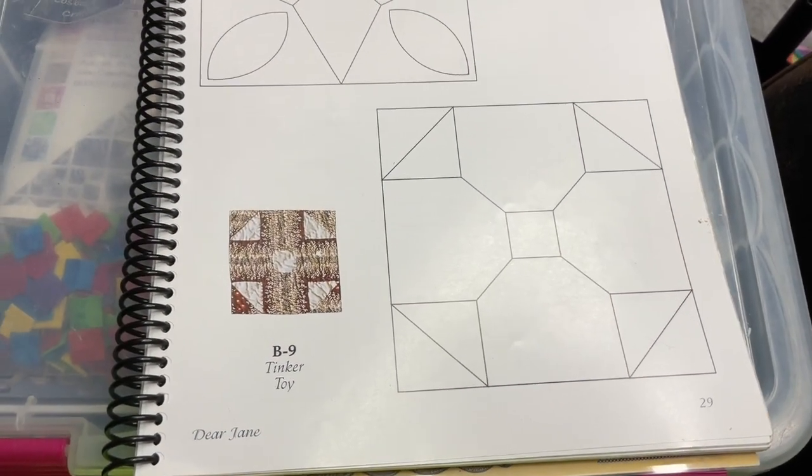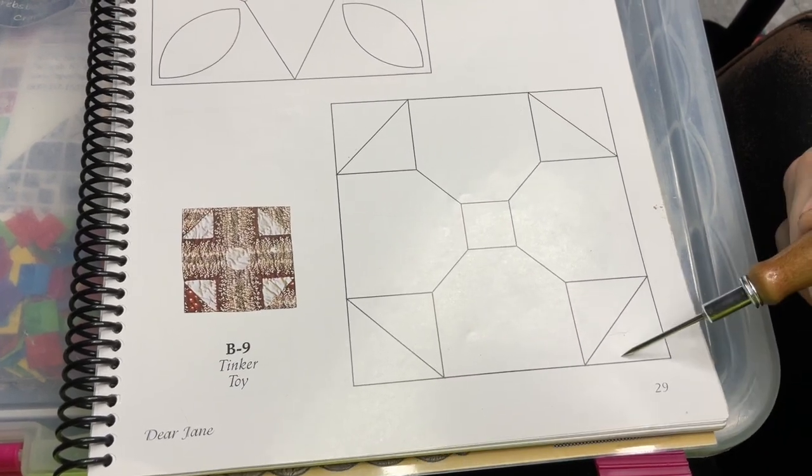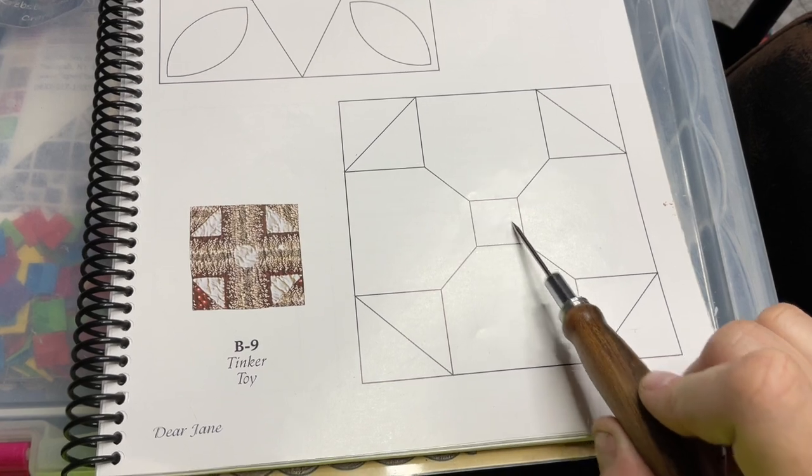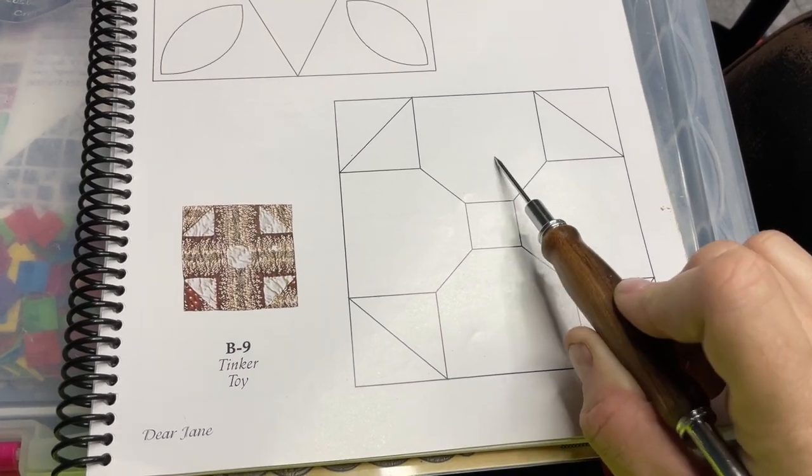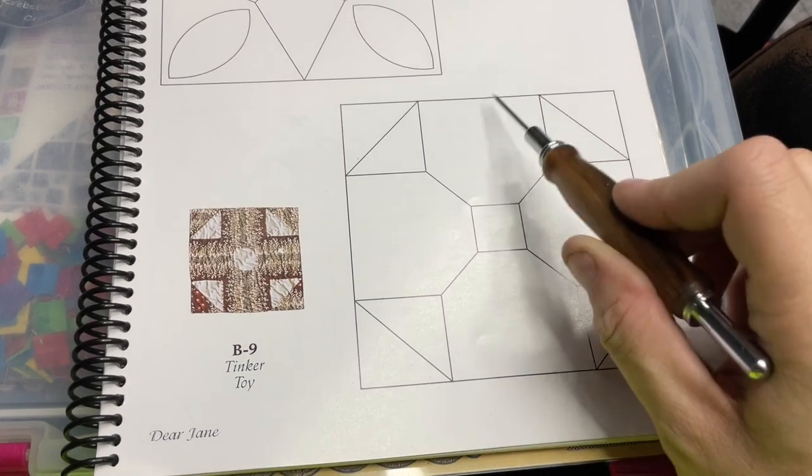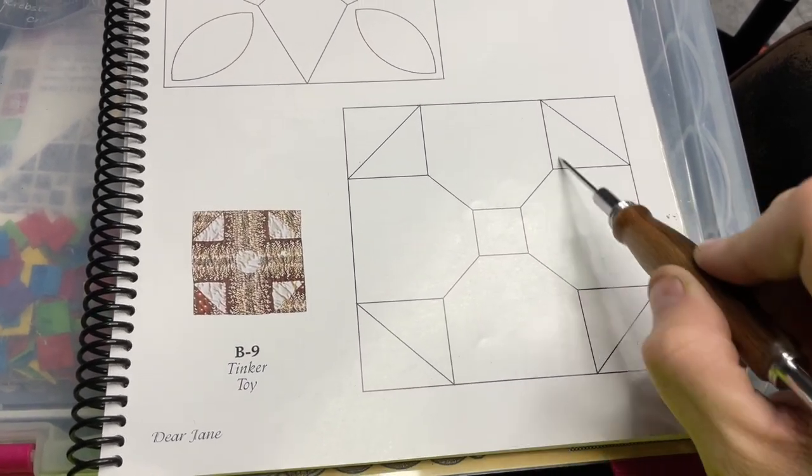Here's B9. B9 has half square triangles in the corners, so we're going to put those together into a square first. Then I'll take the center square and attach them to each side to make it like a bow tie. Then I'll be able to put these here and finally put those squares into the corners. My basting is going to be relatively straightforward.